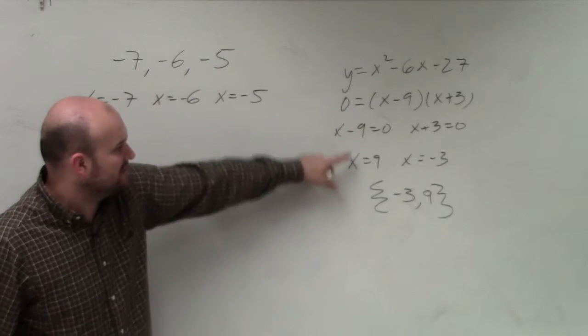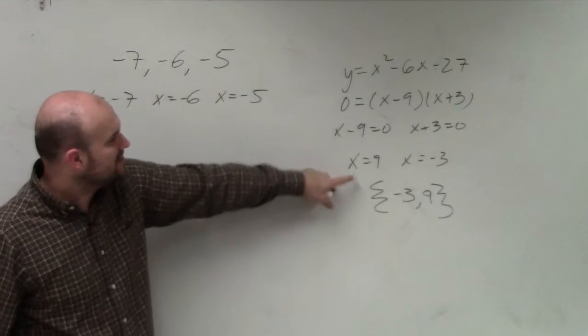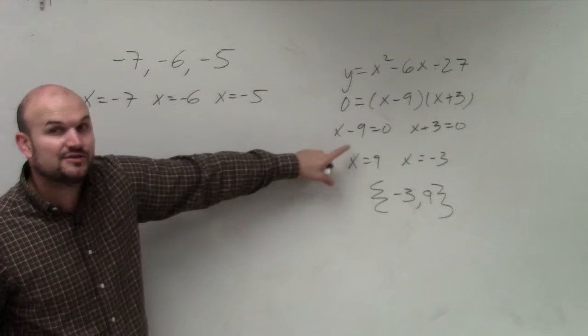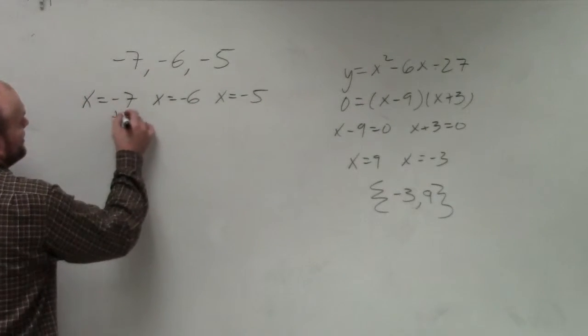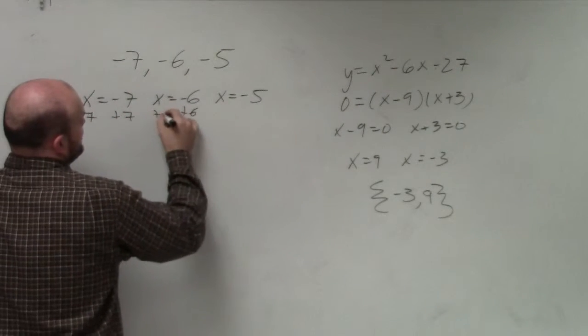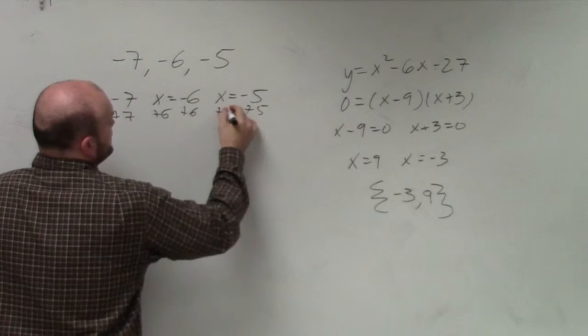now it's here's step 1, step 2, step 3, step 4. So now, once you have them set equal to x, you set them equal to 0. So you add 7 to both sides, add 6 to both sides, add 5 to both sides.